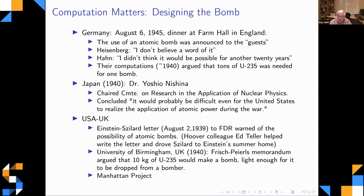In 1940, Dr. Yoshio Nishina chaired a committee in the Japanese government to study the application of nuclear physics — specifically a nuclear bomb. Fission of uranium had just been discovered, and everyone immediately understood it could be a bomb. The Germans said it wasn't practical. Nishina, one of the world's best physicists in this area, concluded it would probably be difficult for the United States to achieve during the war — again, the critical error was in the amount of U-235 required.